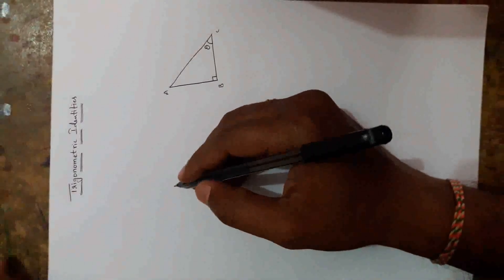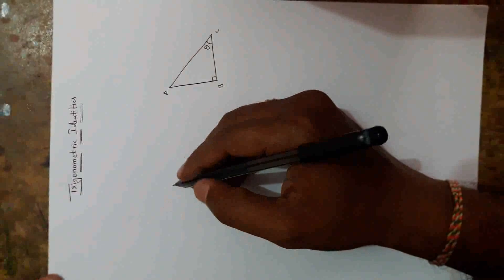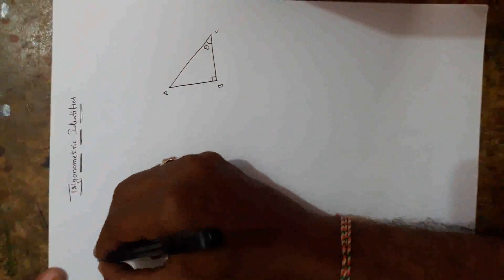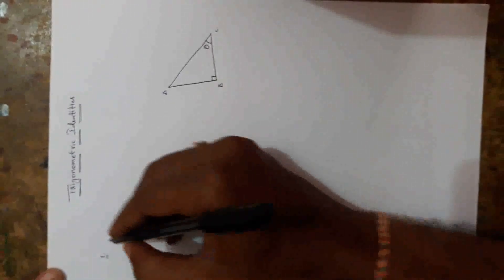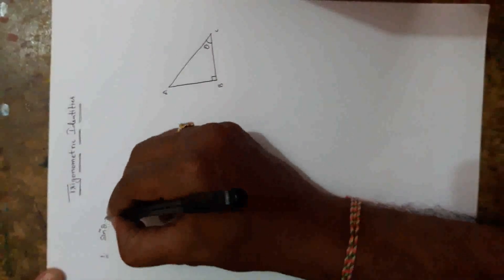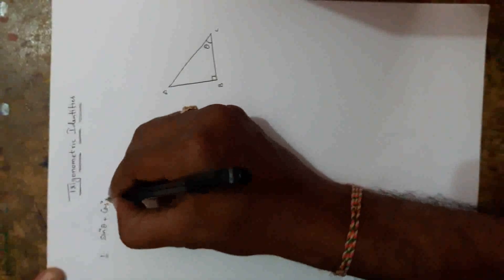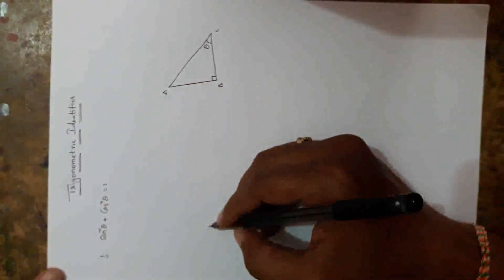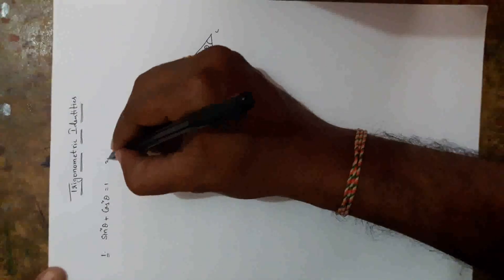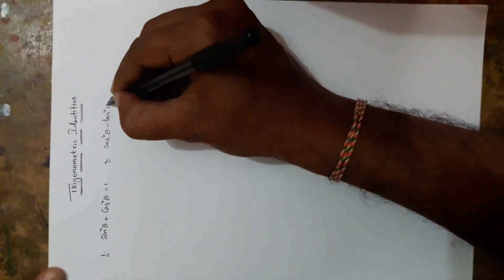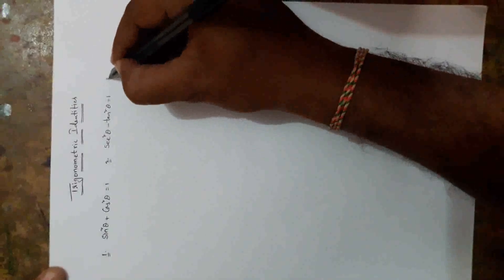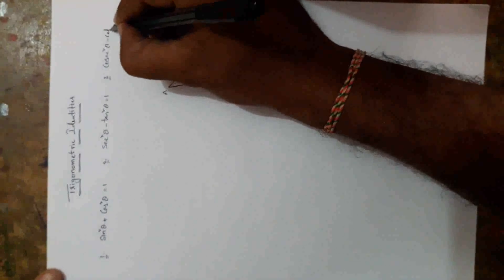Today we are going to learn about trigonometric identities. We have mainly three trigonometric identities. The first one is: sin squared theta plus cos squared theta is equal to 1. The second one is: sec squared theta minus tan squared theta is equal to 1. And the third one is: cosecant squared theta minus cot squared theta is equal to 1.